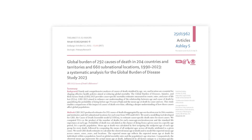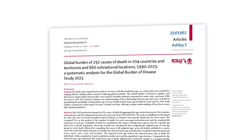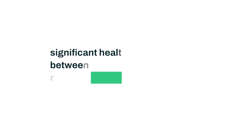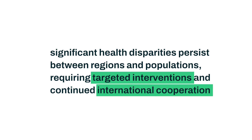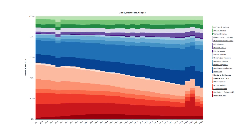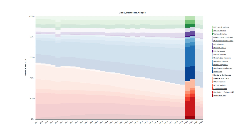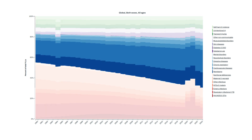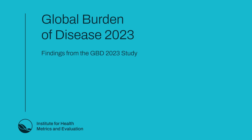The GBD 2023 report shows that global health is improving in some ways, but facing new challenges. While global progress has been substantial, significant health disparities persist between regions and populations, requiring targeted interventions and continued international cooperation. Pandemics and increasing non-communicable diseases both put strains on our existing health systems. We need strong, resilient health systems that can handle the sudden shock of a new virus and manage the slow burn of non-communicable diseases at the same time. Providing strong, up-to-date estimates of causes of death help inform those systems, ultimately improving global health equity.